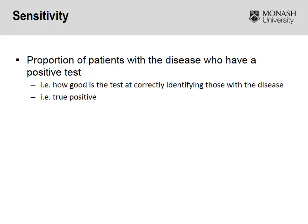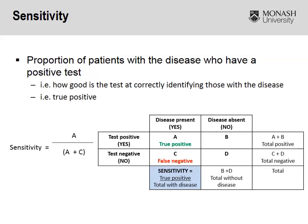Going into it a bit further, sensitivity is focused on identifying how good the test is at correctly identifying those with the disease — in other words, the true positive. In this example, with our 2x2 table and our disease-present population, what we're trying to identify is how good the test is at correctly identifying those that do have the disease. When calculating sensitivity, it is A over A plus C, or our disease-present population.